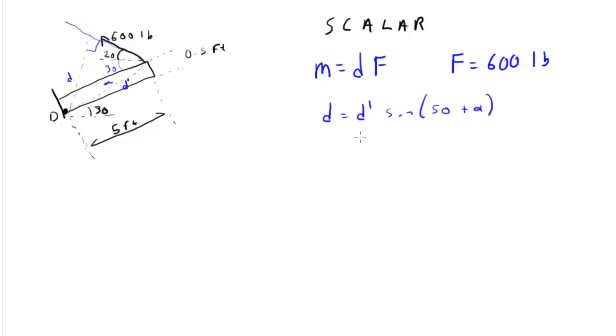So we need to determine what alpha is and what D prime is. Alpha is the inverse tangent of 0.5 over 5, which is equivalent to 5.711 degrees. So here's this distance, here's this distance of 5, this distance of 0.5.